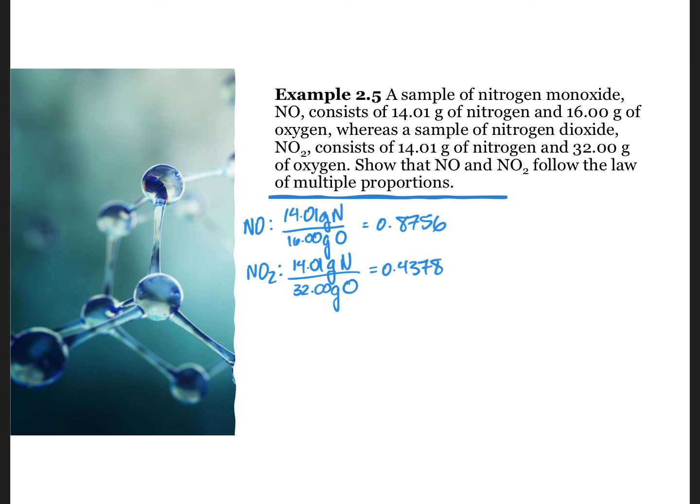Now, compare the two ratios by dividing the larger by the smaller number. The ratio of nitrogen to oxygen mass ratios for these compounds is a whole number following the law of multiple proportions.